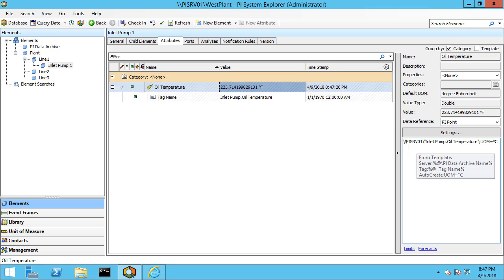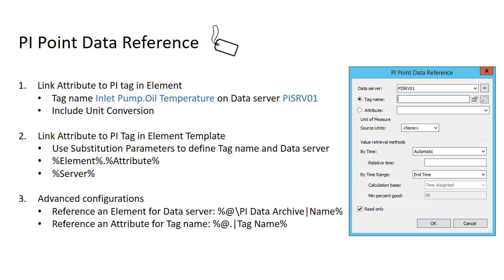You can see the fully resolved tag name. This method is particularly useful if you want to push a large number of tag names into that tag name child attribute using PI Builder, or if you're going to rebuild the names of your tags using some other method like a table lookup, substitution parameters, and string builder.